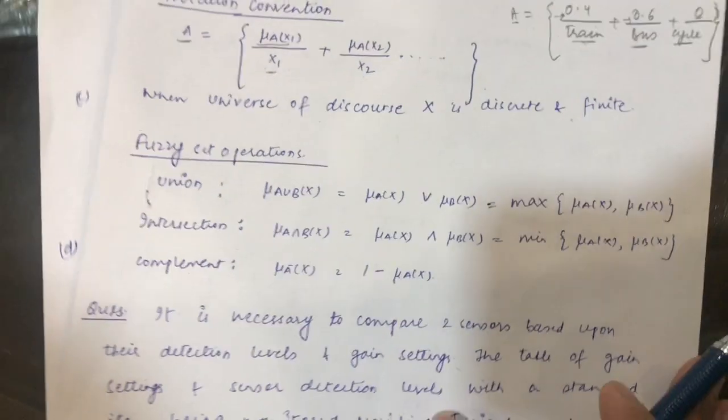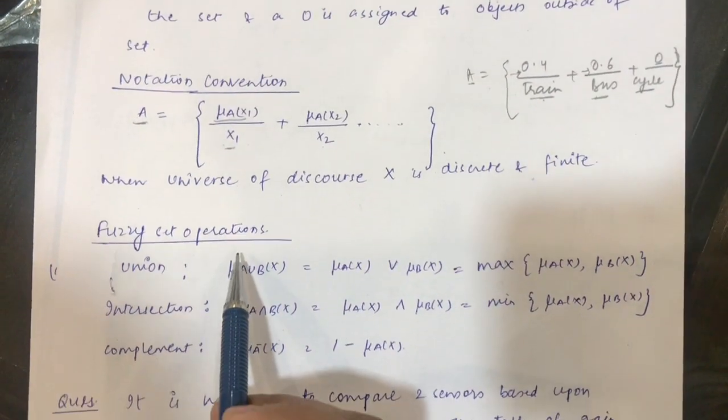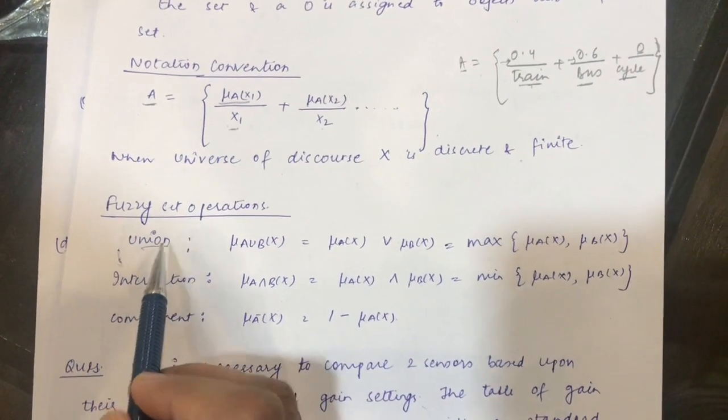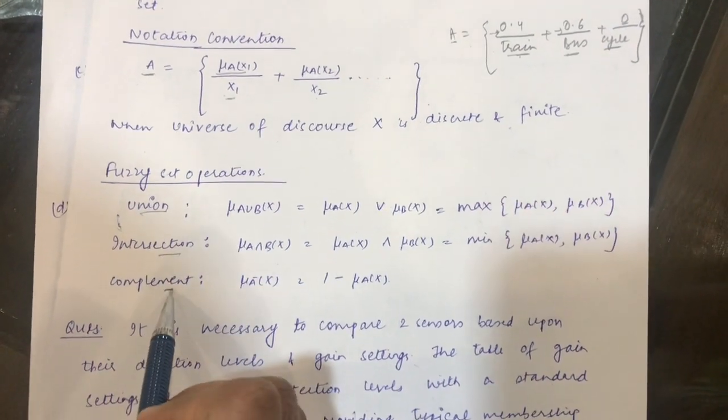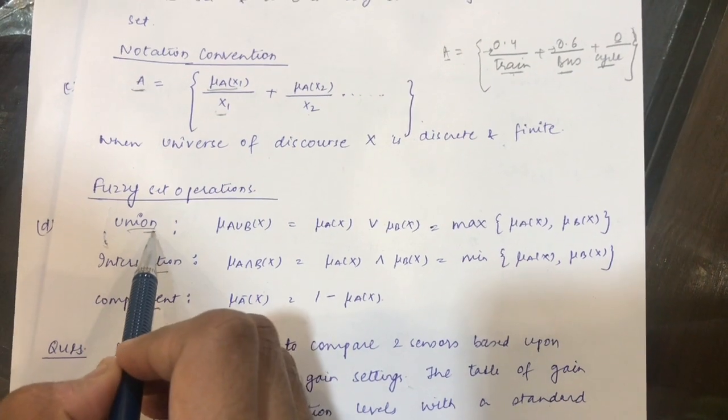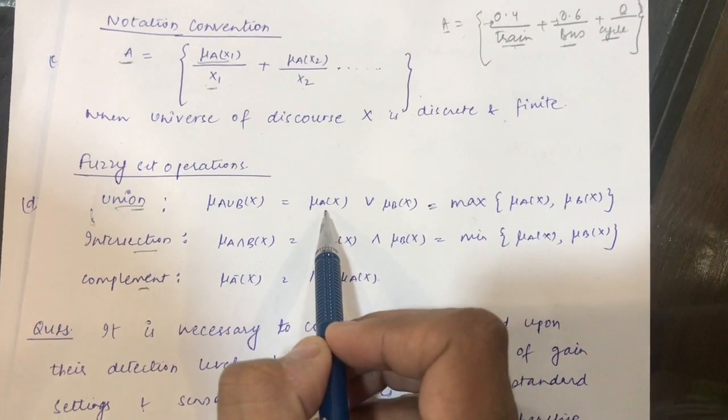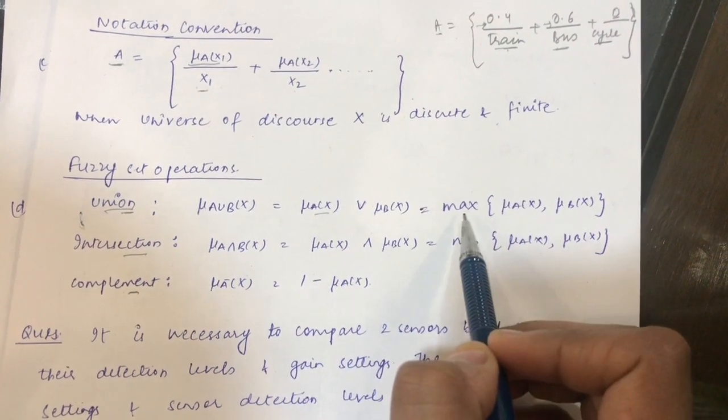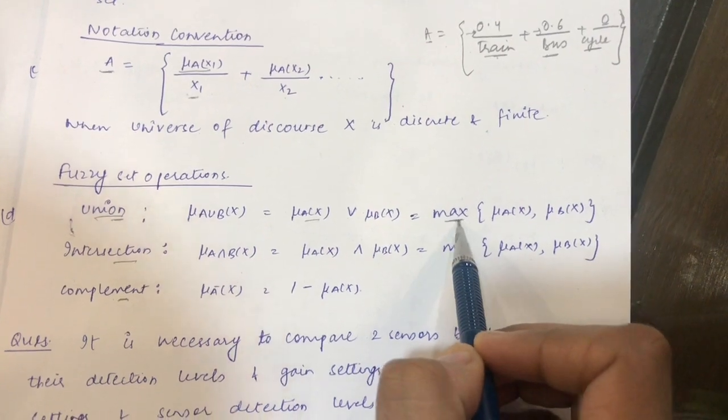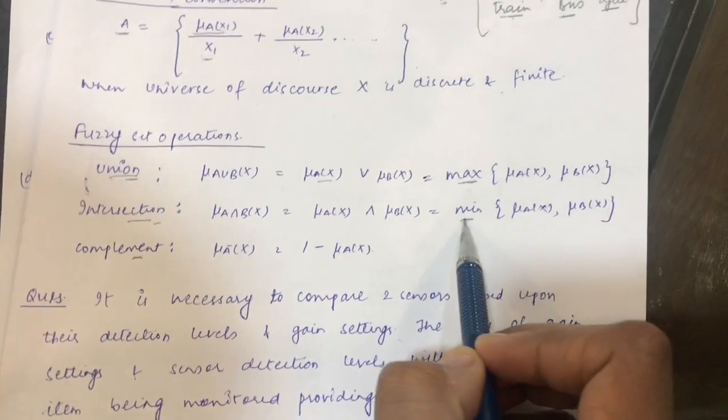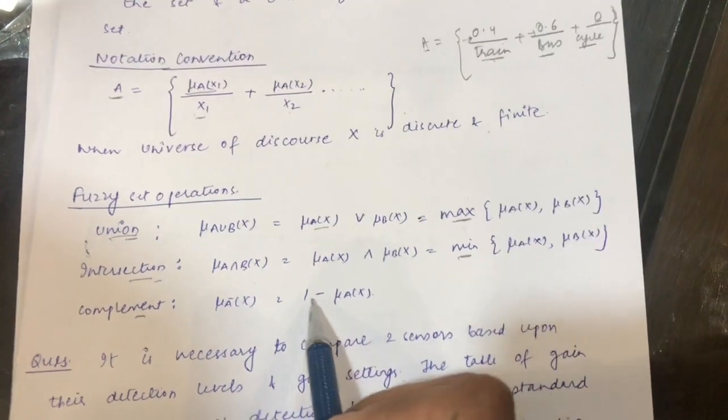Now let's see what operations we can perform on fuzzy sets. We can perform union, intersection, and complement. While taking the union, we take the maximum of the membership values. In case of intersection, we take the minimum, and in complement we simply subtract from 1.